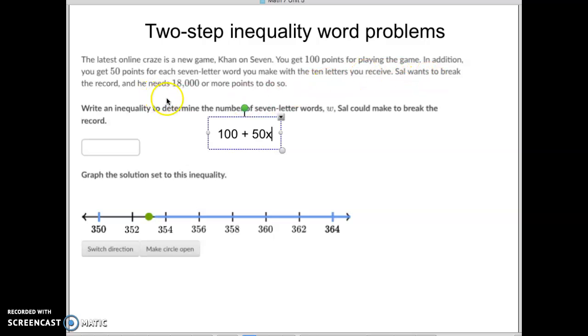Sal wants to break the record, so he needs at least 18,000 points. So he needs that to be greater than or equal to 18,000 points. Write an inequality to determine the number of 7-letter words W. Oh, it can't be X, it's got to be W, so we've got to make sure we watch our variable very closely. It's got to be a W to break the record.